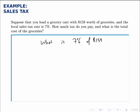When we multiply though, we need to write the 7% as a decimal, so we write that as 0.07 times $159, which comes out to $11.13.